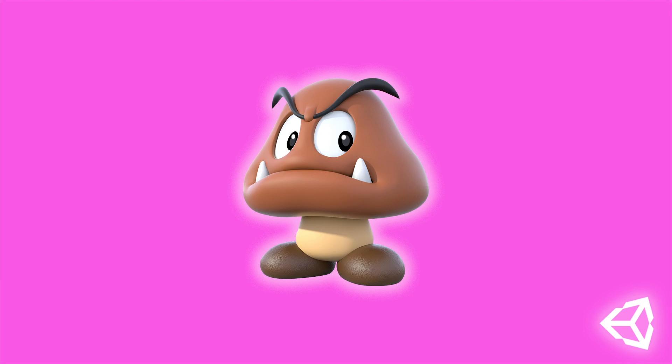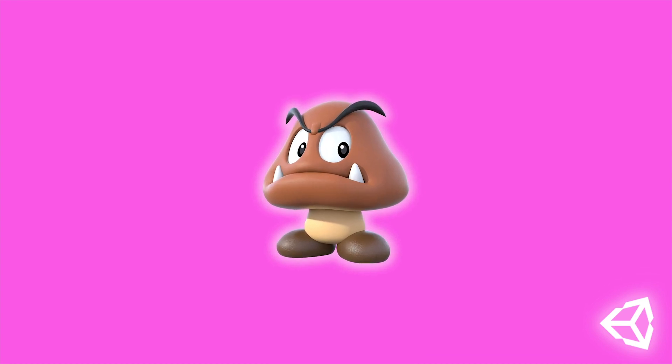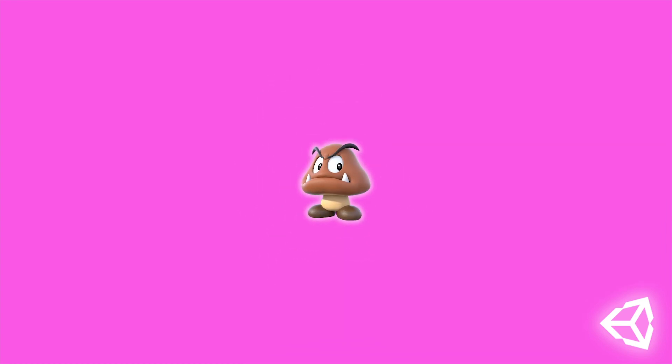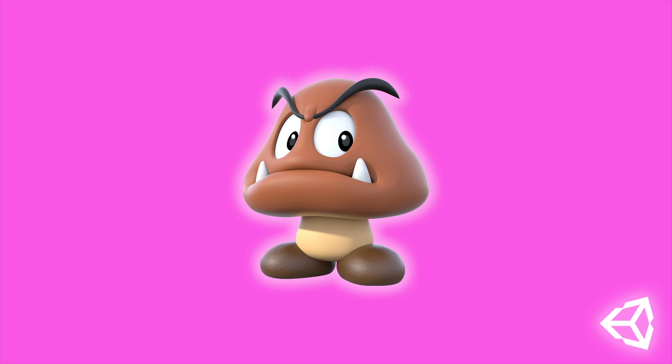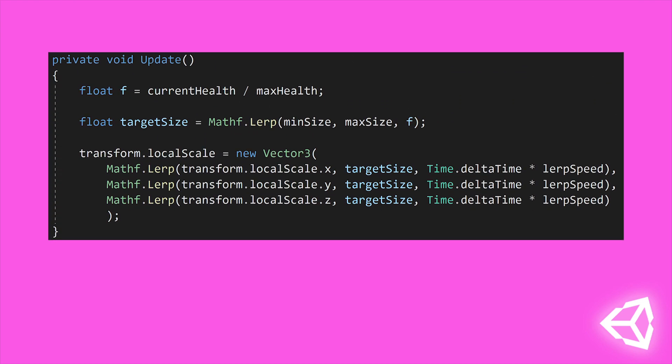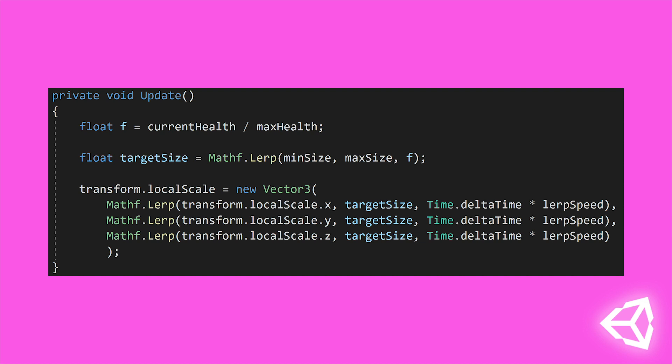What I want to achieve with my lerping code is to have an enemy with some health, and as it loses health I want it to shrink in a smooth fashion. And if it ends up gaining health through some mechanism, I want it to grow smoothly as well. The first thing I'm doing is calculating a fractional health. So if my enemy has 50 out of 100 health, I divide 50 by 100 and get 0.5 back. If it has 25 out of 100 health, I divide 25 by 100 and get 0.25 back.